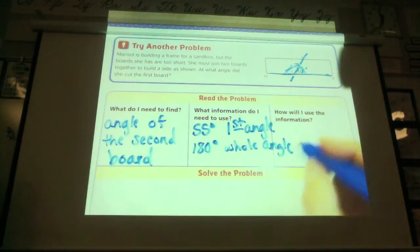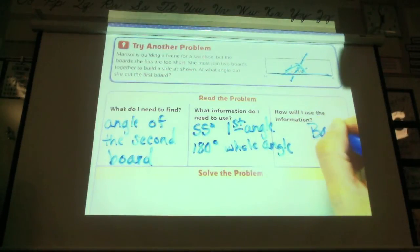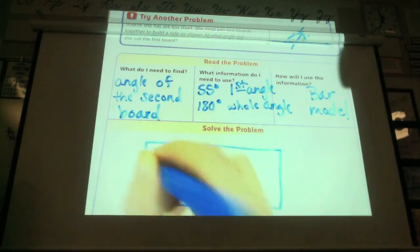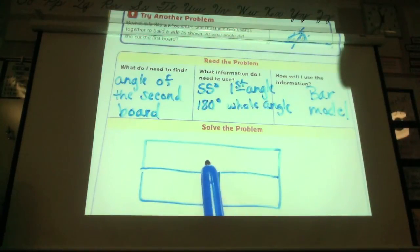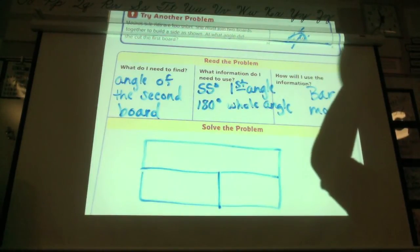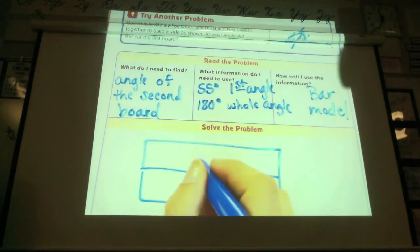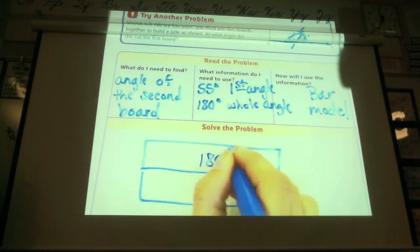So, how are we going to use this information? We're going to do a bar model. I'm going to do it the way we've been doing it on the board. Do I have a number for the top? No. Yes. Yes? Yes. How many of you feel like I have a number for the top? What is that number? 180. 180 degrees.